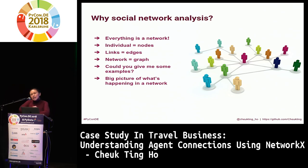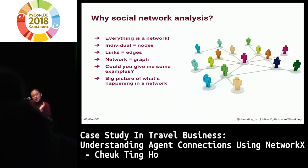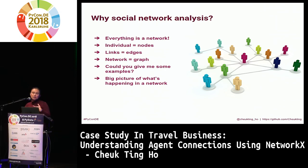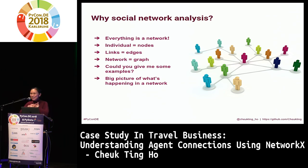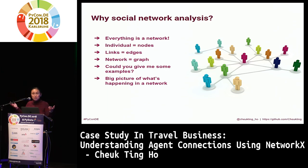Besides Facebook or social media, can anybody think of a similar example — something with nodes and connections? Power Grid — yes, we have different users and connection wires all connecting to each other. Maybe train stations as well, because I took a train from Frankfurt to here. There's train service connecting two stations, so that also builds a network.